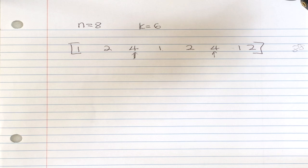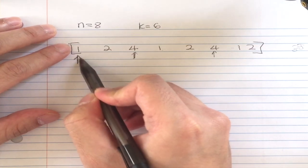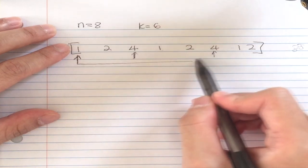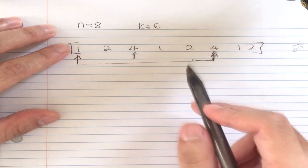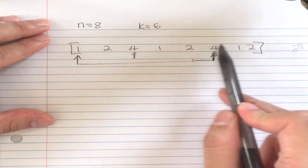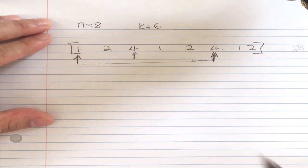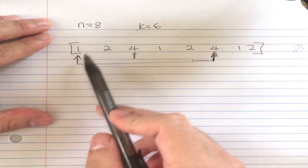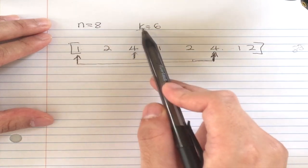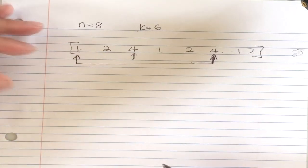Now we want to find the maximum number of peaks with a subarray size k. By subarray I mean contiguous — so from here, one two three four five six, this is a contiguous subarray of size k equal to six. There are six elements in this subarray. We are not picking random elements out of this array; we are only looking at a contiguous subarray of size k where the elements are immediately right after each other.